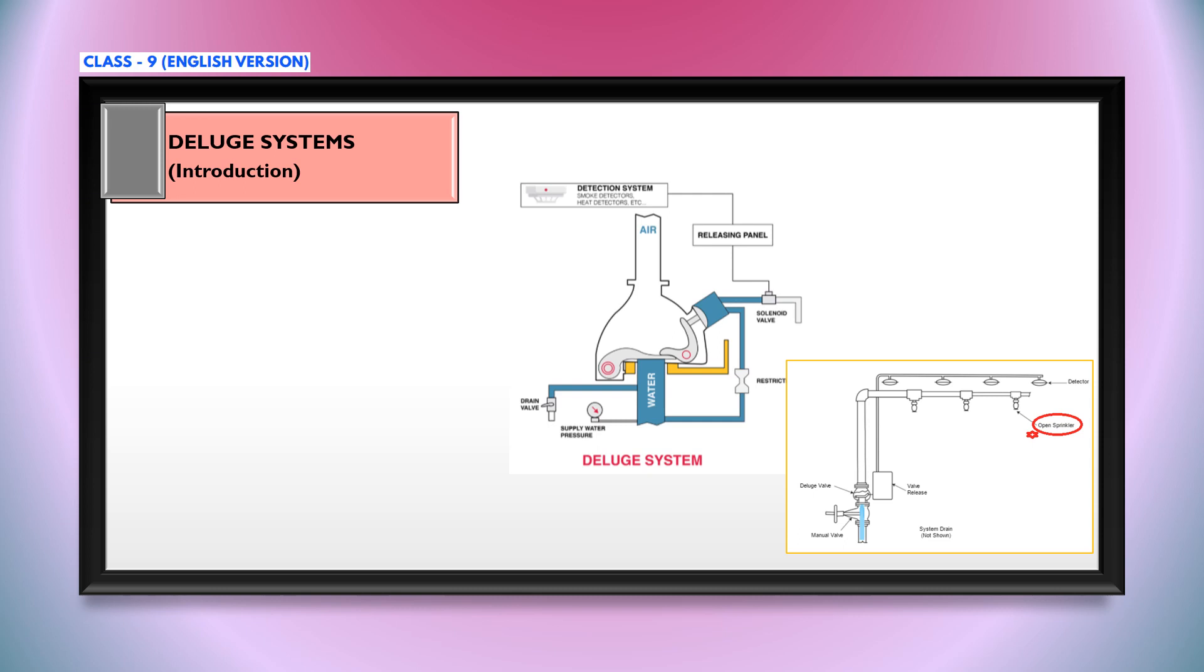A deluge system is a fixed fire protection system which totally floods an area with pressurized water through a system of piping and open nozzles or sprinklers. The system piping is empty until the deluge valve is activated by hydraulic, pneumatic, electric, or manual release systems.